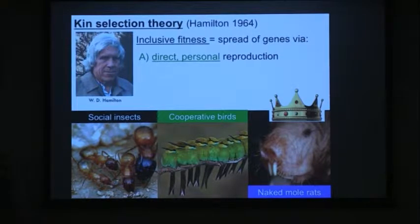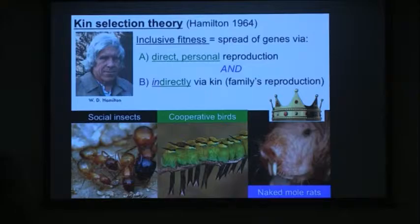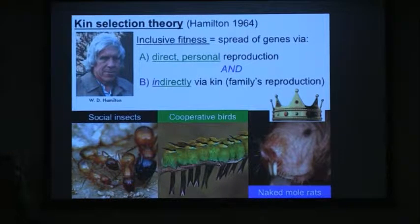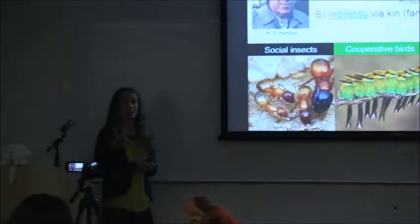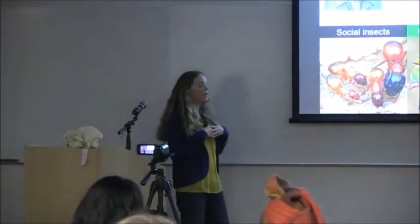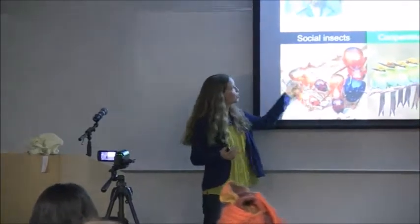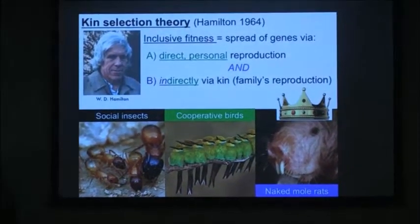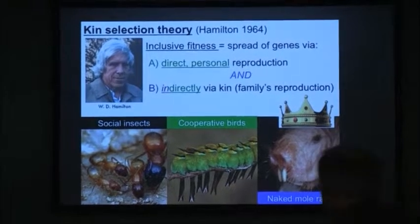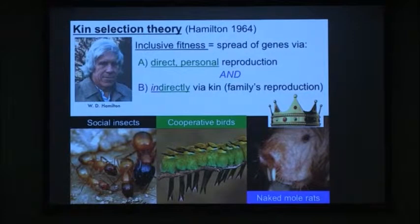What W.D. Hamilton did differently is say, let's think about inclusive fitness — let's think about what our genetic relatives are doing. Even if I don't personally reproduce, through my shared genes with genetic relatives I may indirectly be successful by helping them. There is an enormous body of evidence that social insects, cooperative birds, naked mole rats, and even other mammals will give up their own breeding success to help genetic relatives because of kin selection.